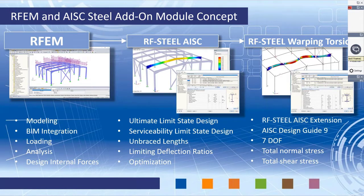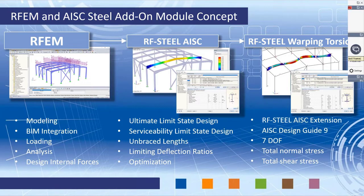RF Steel Warping Torsion is our brand new module extension, meaning you must have the Steel AISC module in order to activate it. It performs the AISC Design Guide 9 for warping torsion with seven degrees of freedom. Back in RFEM we work with six degrees of freedom. We calculate the total normal stresses, total shear stresses, compare these to the available torsional strengths, and ultimately come up with a design ratio.